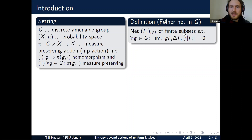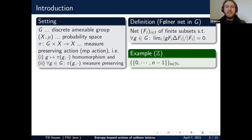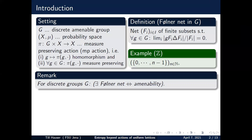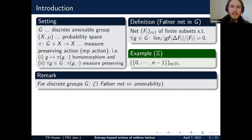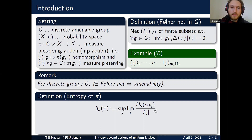Basically, this means you have a net of finite subsets of your group which become more and more invariant. For any fixed g, shifting your F_i a little bit, the overlap to the original set is quite large asymptotically. Here's an example — this may be the most famous Følner net in all of ergodic theory, what you use for averaging when the acting group is the integers. For discrete groups, the existence of Følner nets is actually equivalent to amenability.